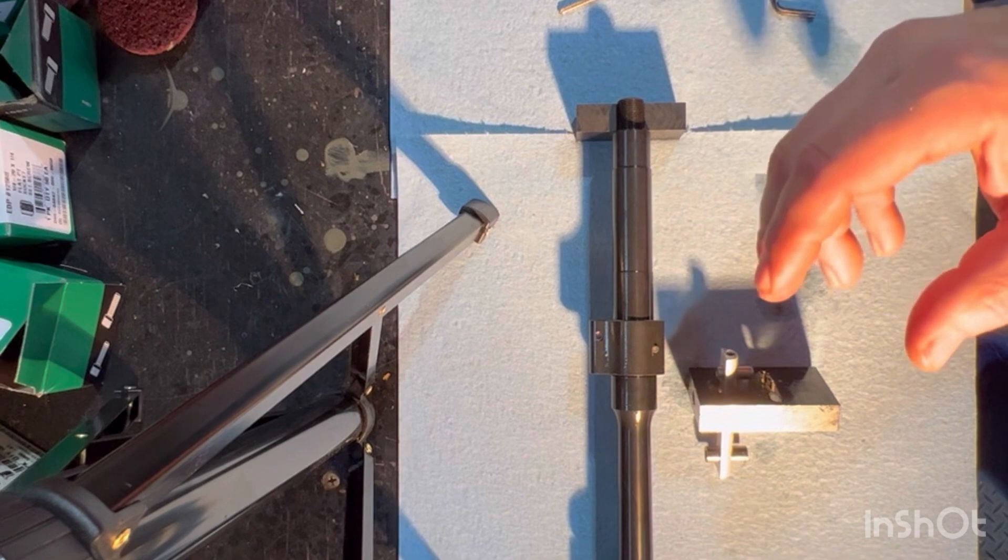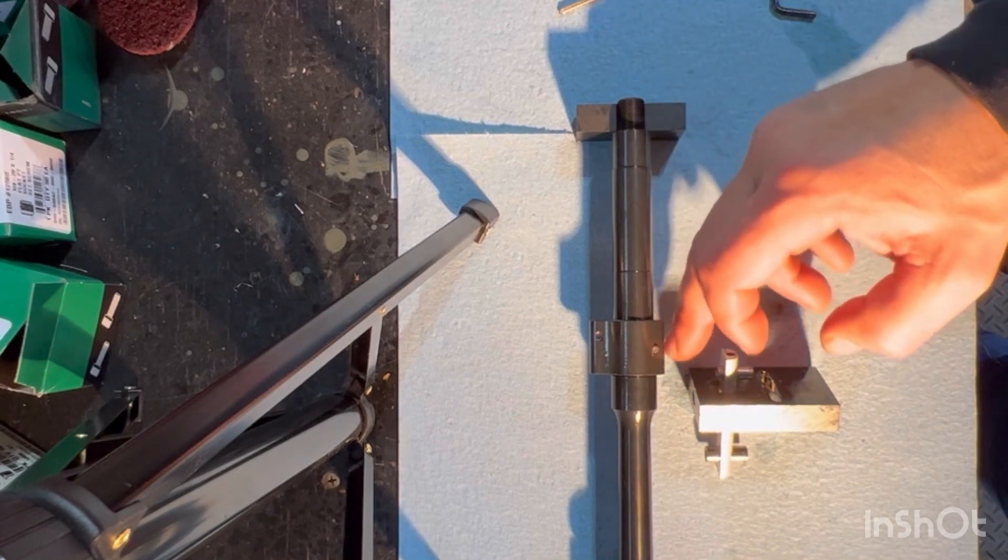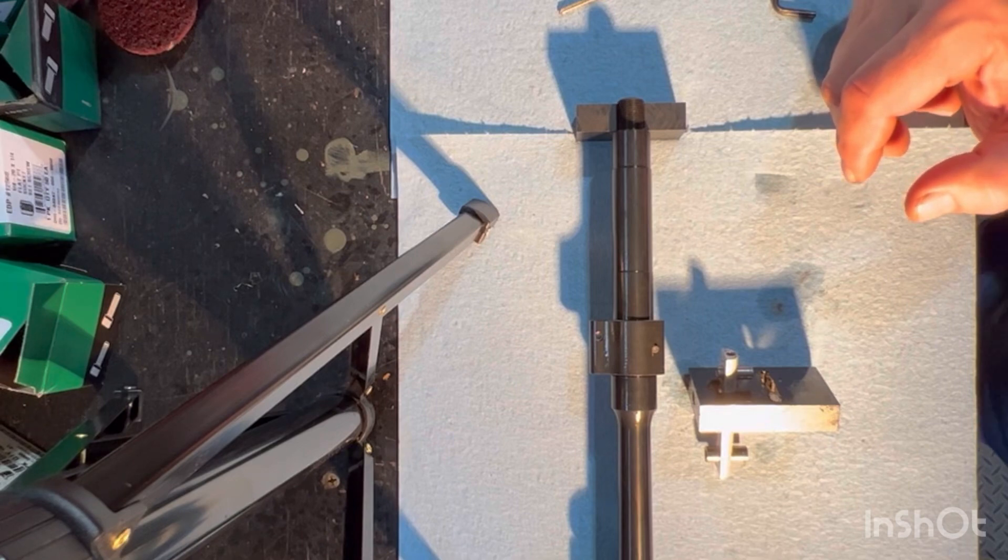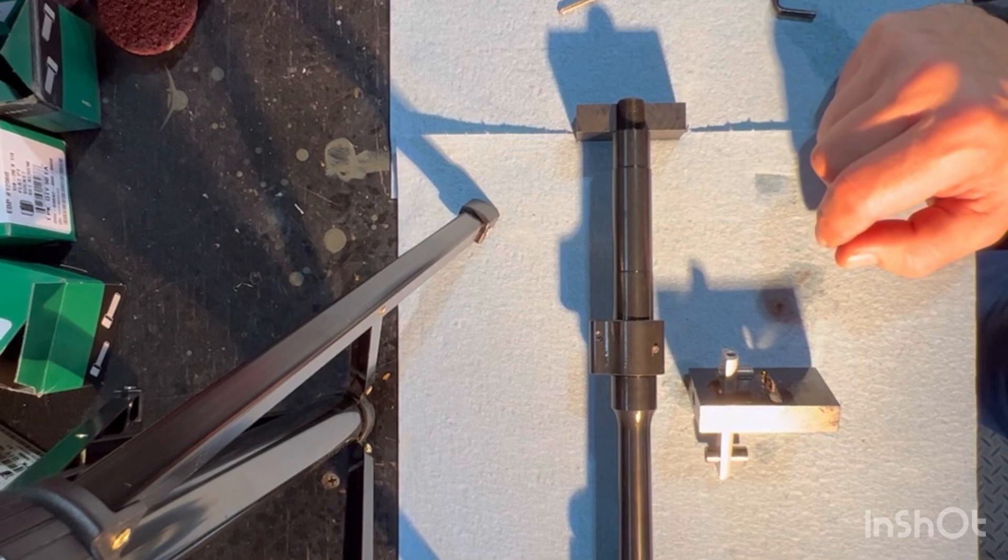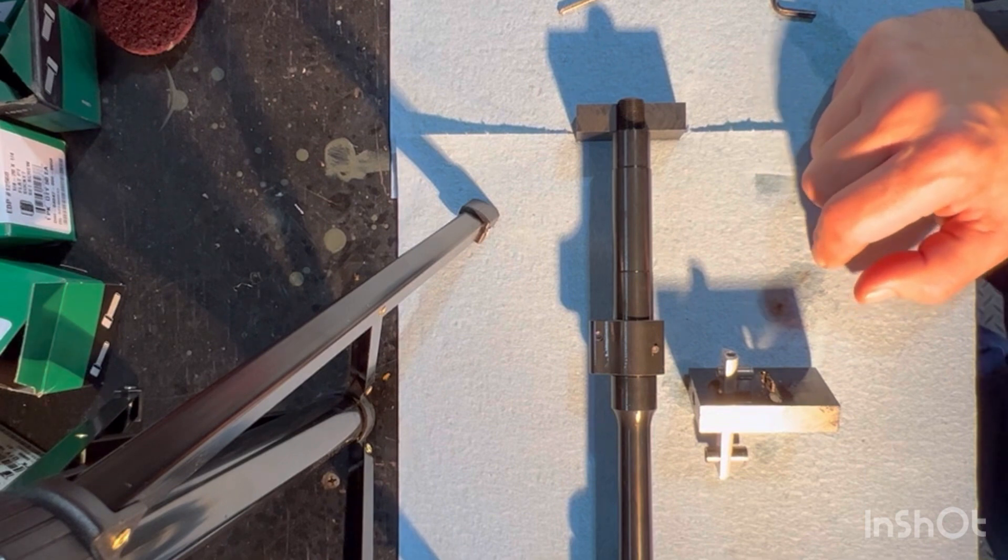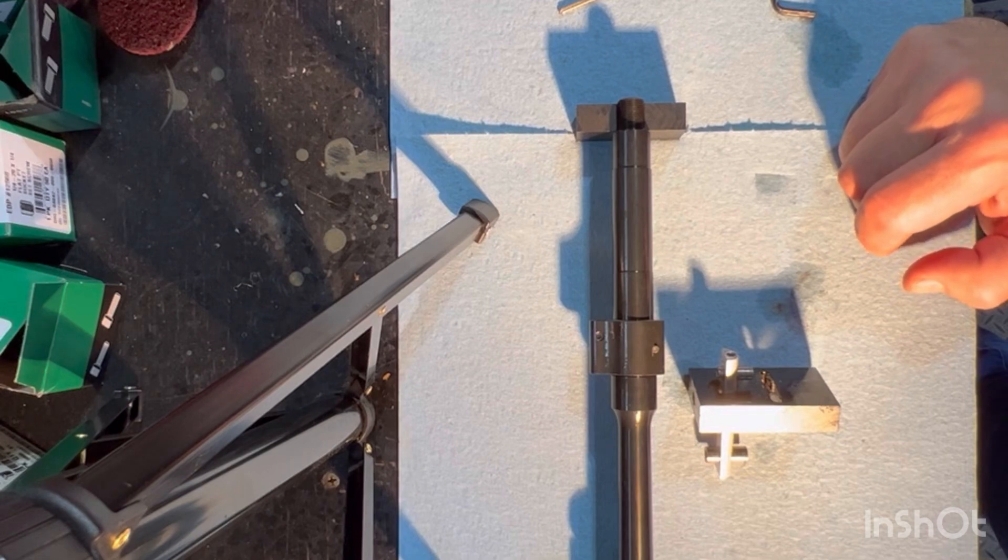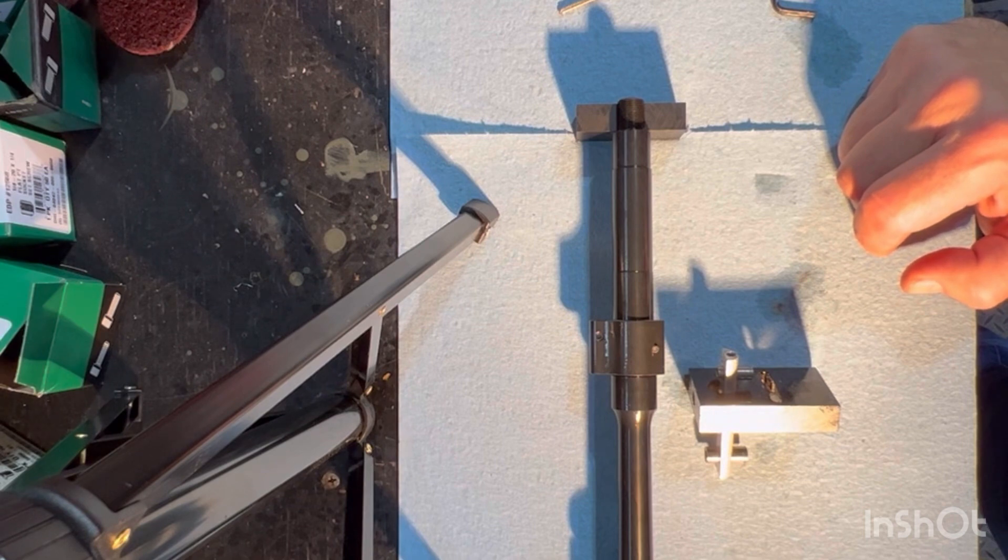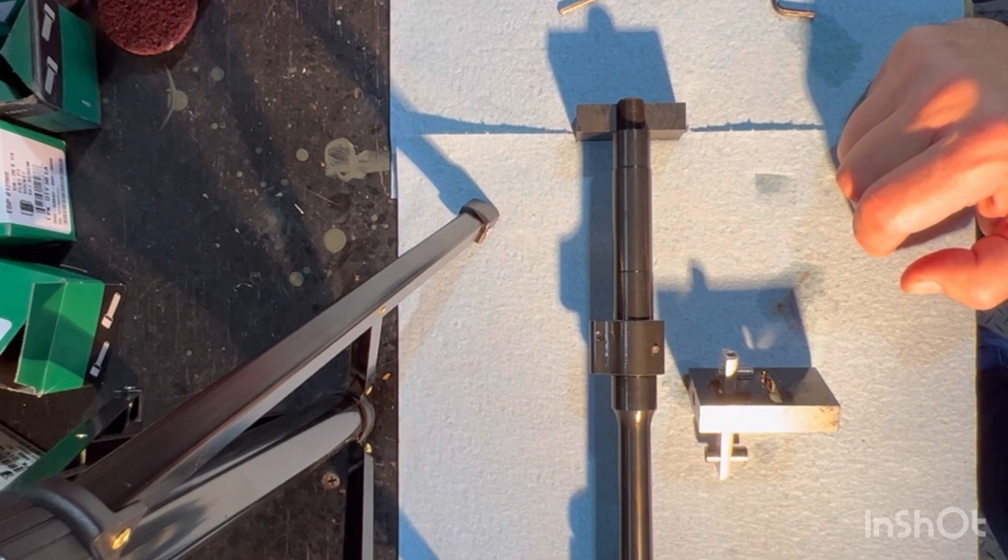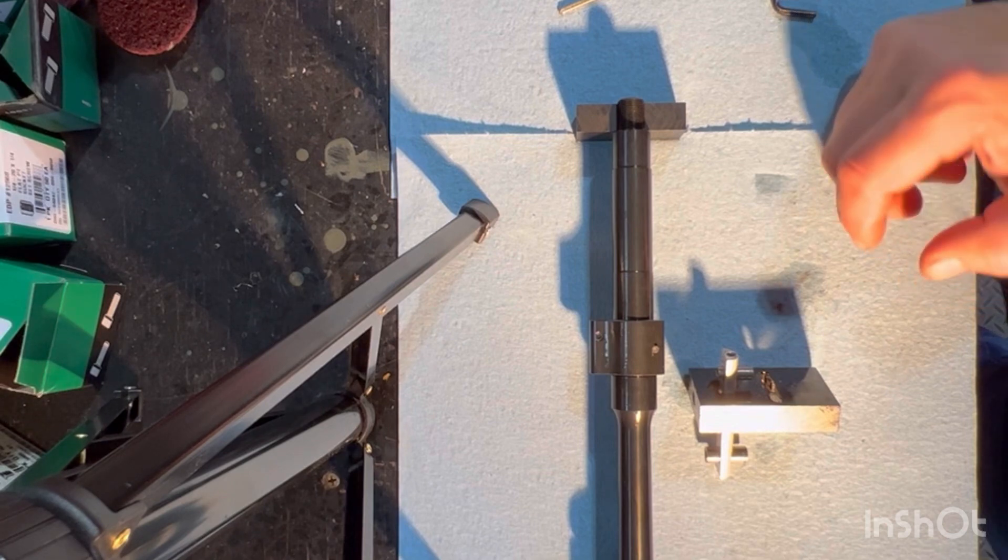So the beauty of this jig is, based on the fact that it mounts to the gas block, it really is universal. So as long as you're using a 10-32 or a number 10 set screw, you can use this jig. So it's not gas block journal dependent. It's not dependent on the shape of the block. You can just bolt it up, get it set up, and drill away. So if you have any questions, feel free to reach out to me. I'm usually pretty quick to respond. I hope somebody learned something from this, and have a good one. Thanks.